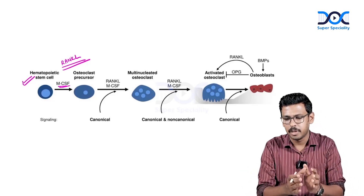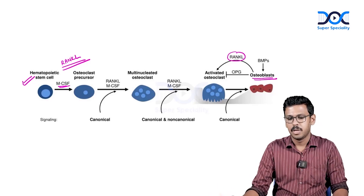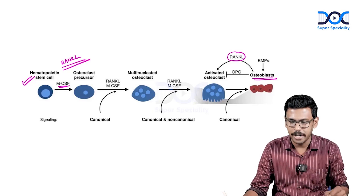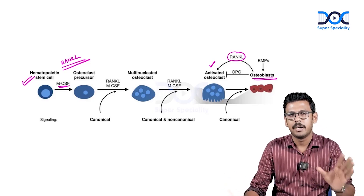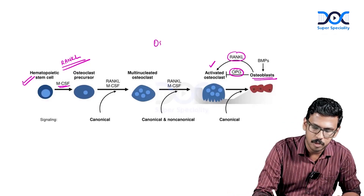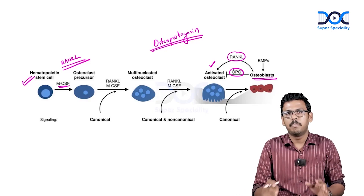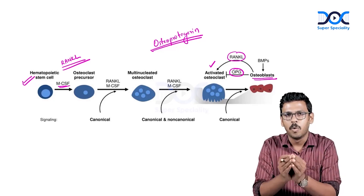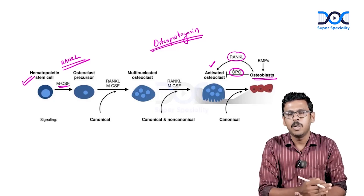RANK ligand is produced by osteoblasts. The osteoblast has a direct effect on osteoclast differentiation and survival in two ways: it produces RANK ligand, which binds to RANK receptors on osteoclasts to stimulate their differentiation; and it can also produce osteoprotegerin to antagonize RANK ligand effects. The balance between these two agents determines the net osteoclast action.